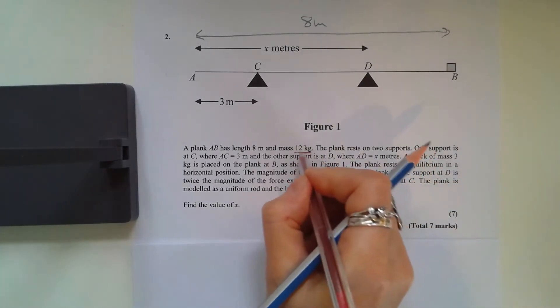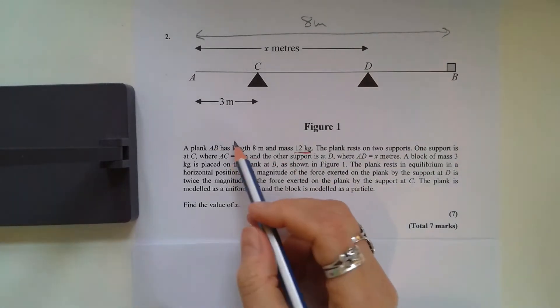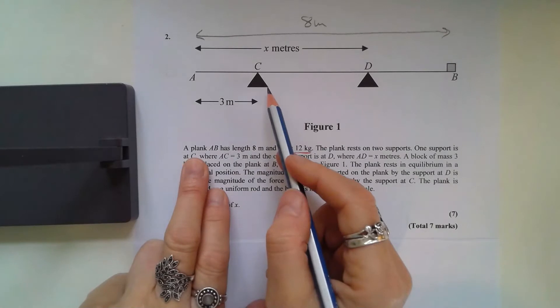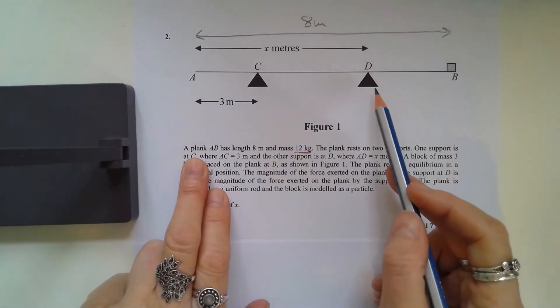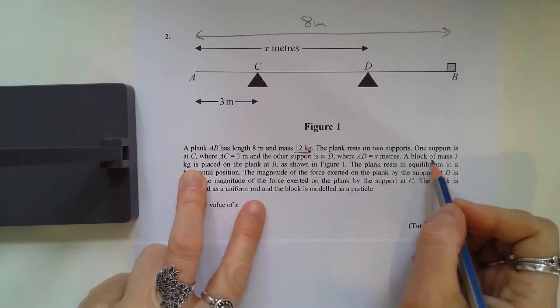The plank rests on two supports. One support is at C where AC is 3 meters, and the other support is at D where AD is x meters.